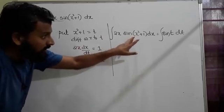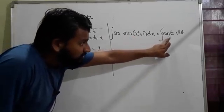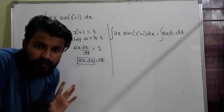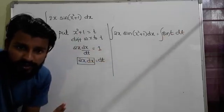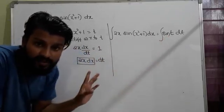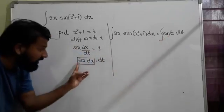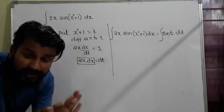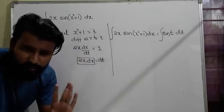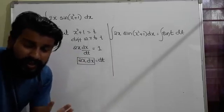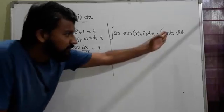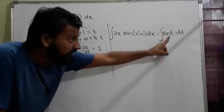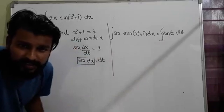One thing you observe: after substitution, this new integral should contain only variable t and dt with some constant. Constant can be there, but x should not be there. If x is there, it means you've made one mistake.